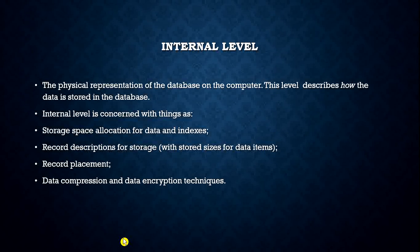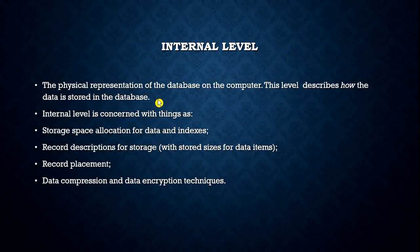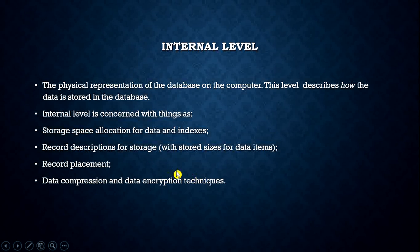The third level is the internal level, which is the physical representation of data on the computer. This level describes how the data is stored in the database — it is basically the physical implementation of the database. The internal level is concerned with storage space allocation for data and indexes, record descriptions for storage, record placement, data compression, and data encryption techniques. For example, if data is very large, it may need to be compressed; if it is sensitive, it may be stored in encrypted form.